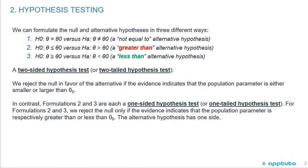If it doesn't equal zero, it could be less than or greater than — it can be both sides, so it's a two-tailed hypothesis.